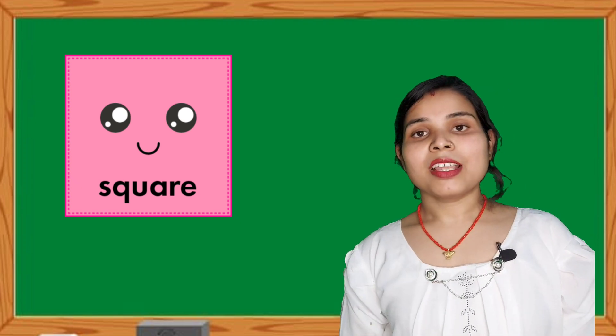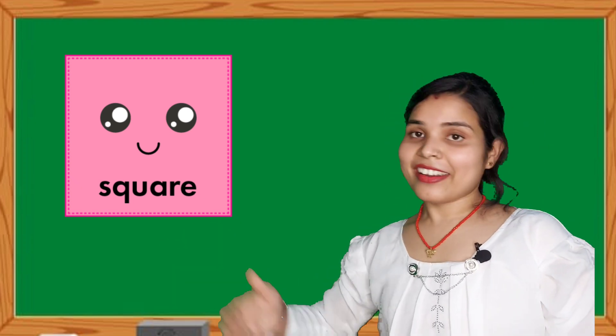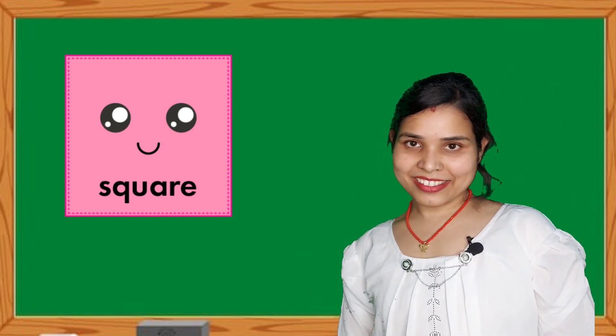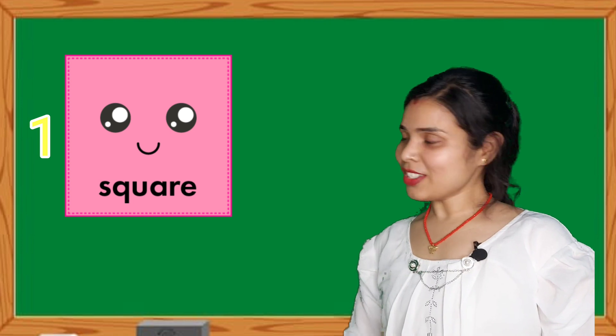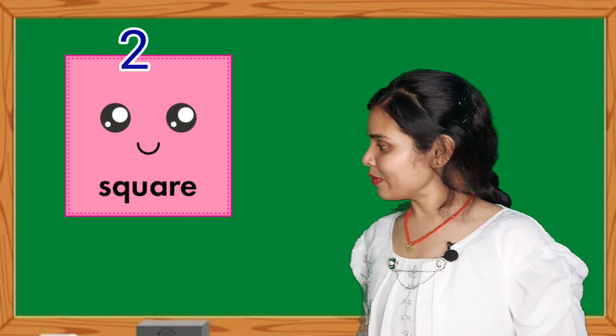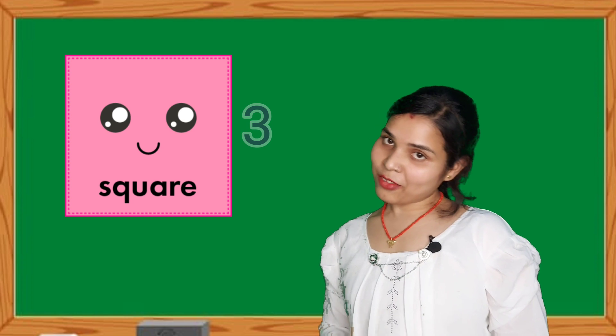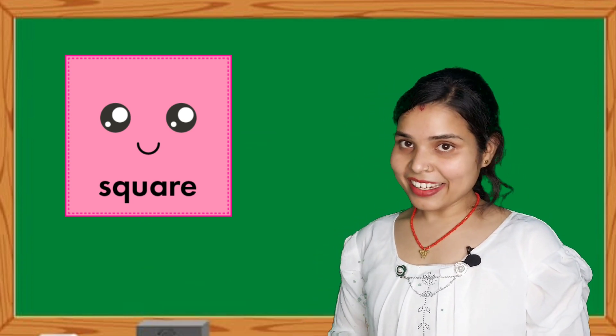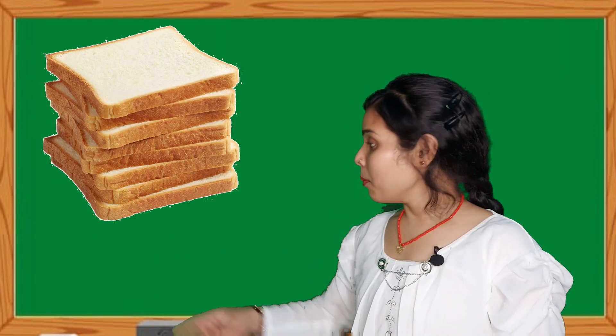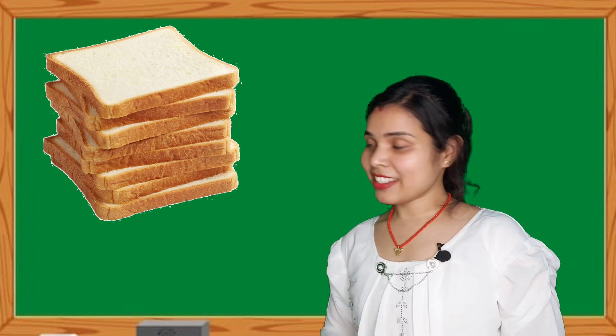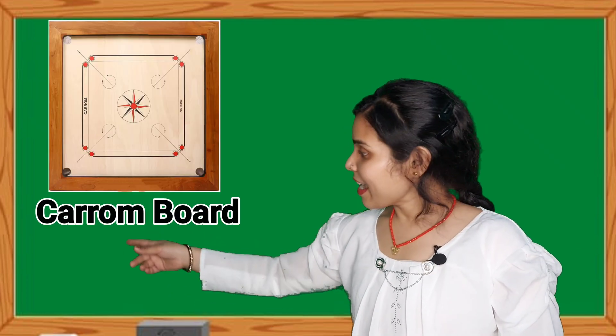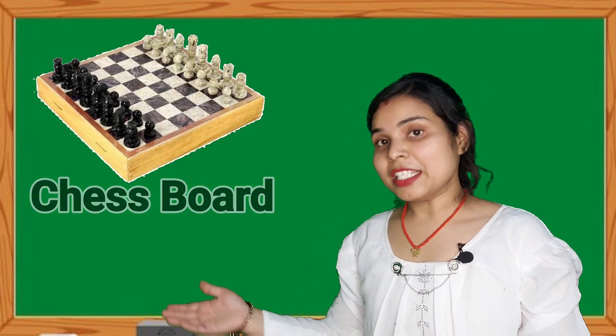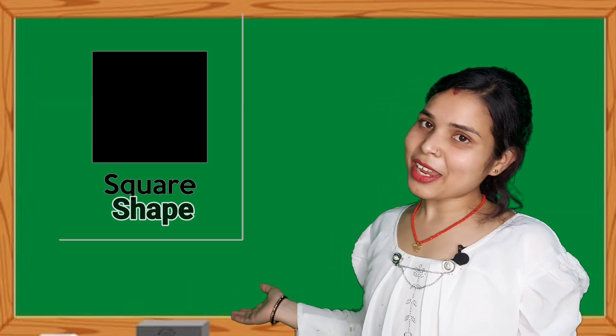Children, now next shape is square. A square has four equal sides. Let's count. One, two, three and four. The shape of square like cushions, bread, dice, carom board and chess board. These are all examples of square shape.